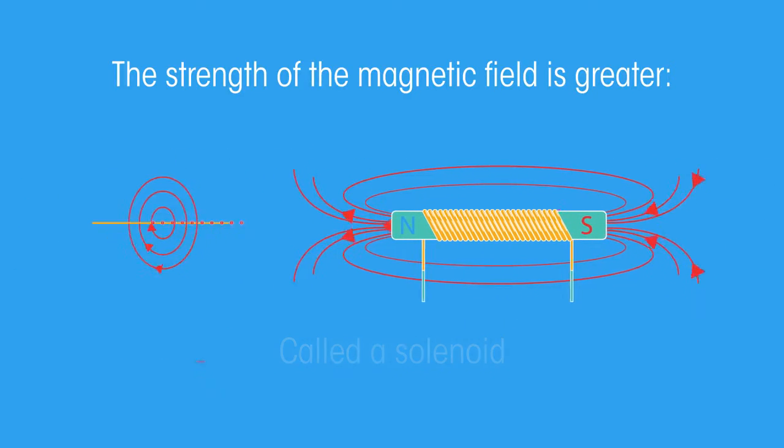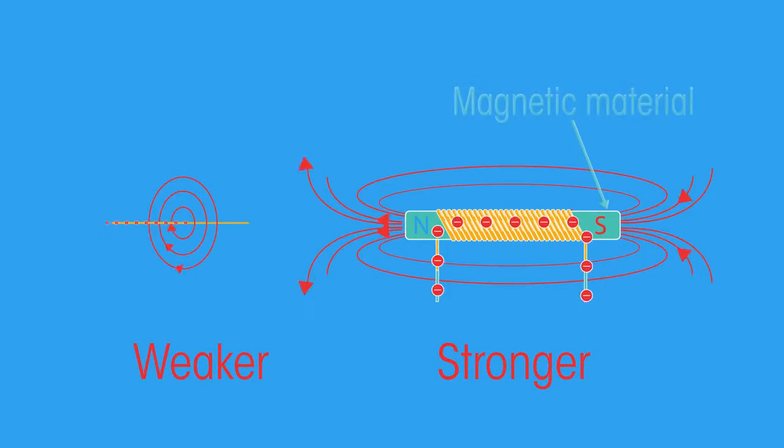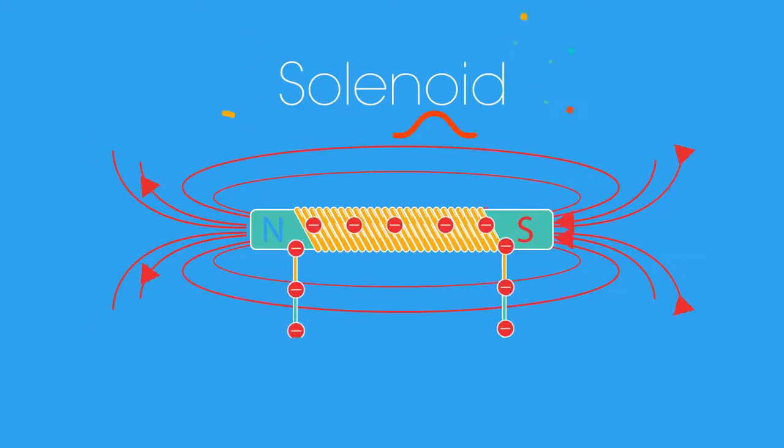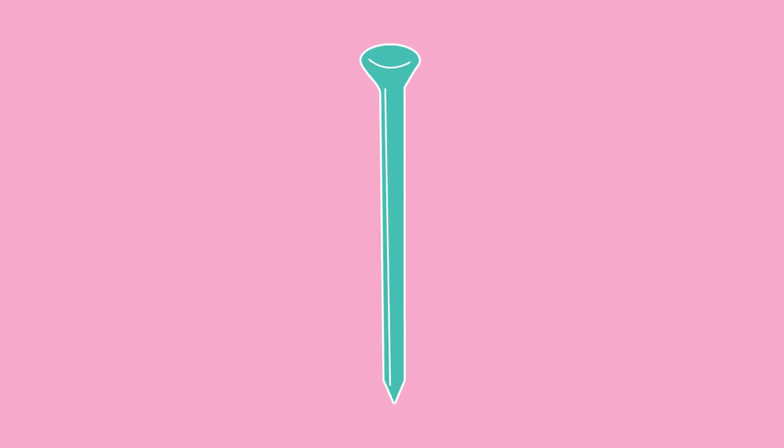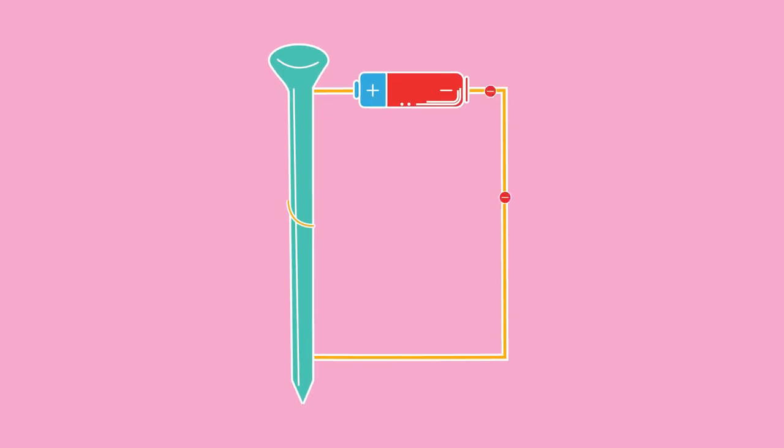The magnetic field around a straight wire isn't very strong, and so coiling the wire around an iron core creates a stronger electromagnet. This is sometimes known as a solenoid. We can use an iron nail to create a simple electromagnet.